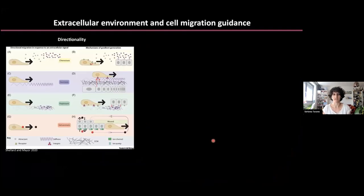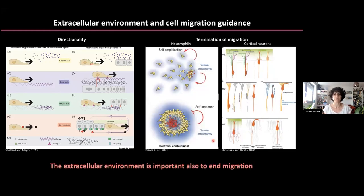We all know that cell migration is fundamental to development. In many organisms, cells originate far away from their final destination and have to reach this position, often following extracellular cues. But cells don't only need to know where to go — they also need to know where and when to stop. Recent data has shown that the extracellular environment is as important in determining the end of migration, as seen in neutrophils and cortical neural migration.